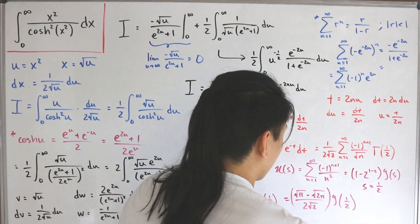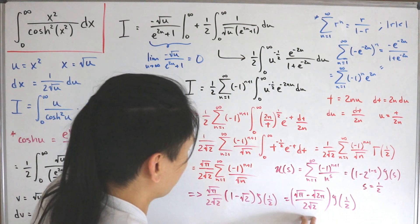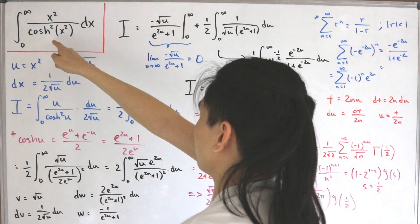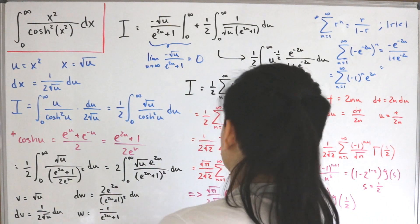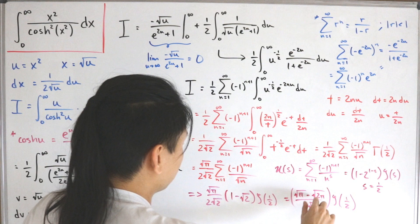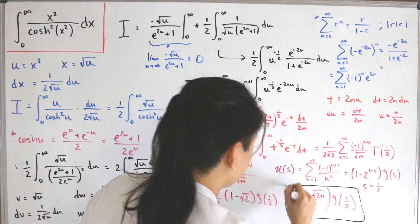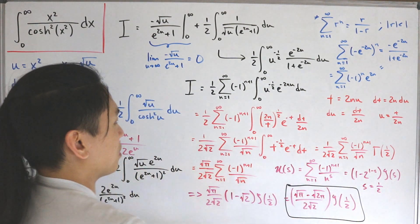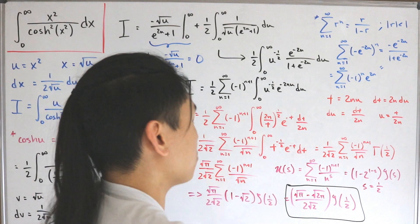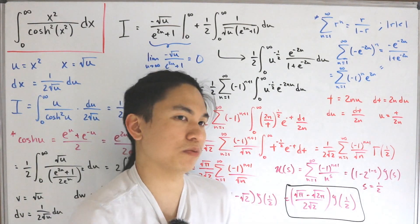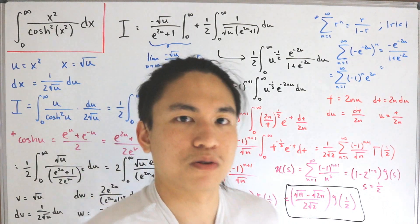As mentioned, this is our final answer. Interestingly, you could actually solve for the special value of zeta(1/2) by dividing both sides of the equation. This integral comes down to a nice closed form involving the Riemann zeta function at one-half, which is pretty cool.